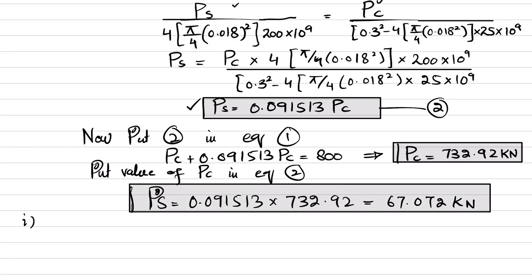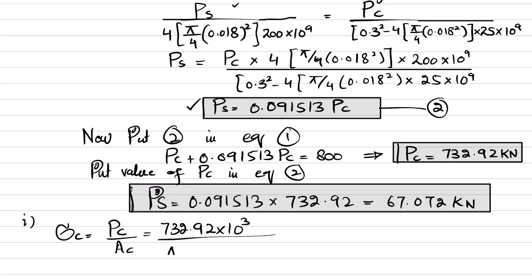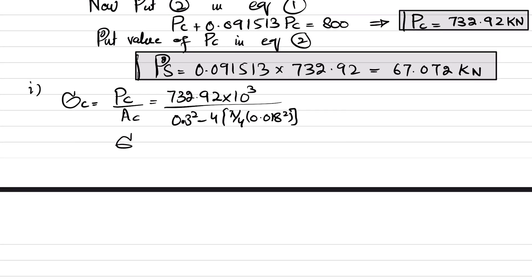Now we find the stress in concrete: sigma_c equals Pc divided by Ac. So sigma_c equals 732.92 times 10^3 divided by [(0.3)^2 minus 4 times (pi/4) times (0.018)^2]. The stress in concrete comes out to be 8.244 megapascals.